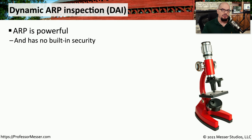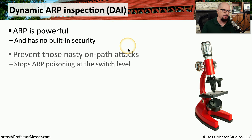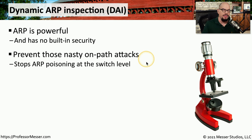In previous videos, we've discussed how ARP spoofing could be used to circumvent existing security and create on-path attacks. There is a way to prevent this in the switch by using DAI, or Dynamic ARP Inspection. This adds additional monitoring to the network and adds to the security that normally is not included with the Address Resolution Protocol.